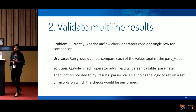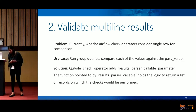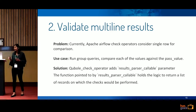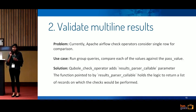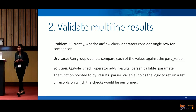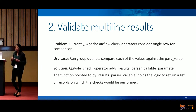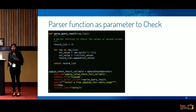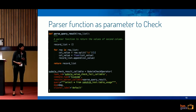The second enhancement was that we wanted to validate multi-line results. Currently the operator considers only the first row for comparison, but for our use case we wanted to run group-by queries and compare each aggregated value against a pass value. We added a parameter called results_parser_callable to our QBOL check operator. The function pointed to by this parameter holds logic that returns a list of records on which checks would be performed — so it's up to us which row or column to use for comparison and how we want to parse it.